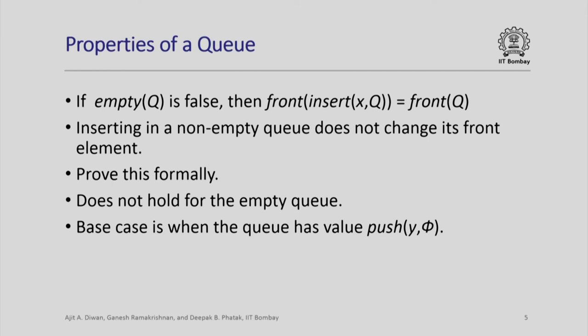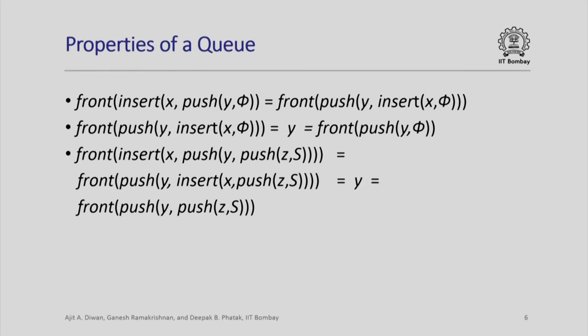We will prove this formally. The base case is not the empty queue, but a queue having one element whose value is obtained by pushing an element y into the empty sequence. We consider a queue with a single element push(y, phi). If we insert x into such a queue, by definition its value is obtained by pushing y in the queue obtained by inserting x in phi. Front of push(y, insert(x, phi)) is defined to be y, and front of push(y, phi) is also y. So both sides equal y and the equality holds.